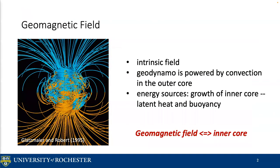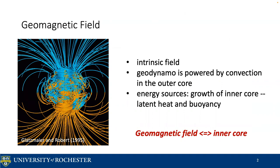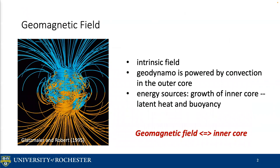I would like to review some basic features of the geomagnetic field today. First, it is an intrinsic field, and the geodynamo is powered by convection in the outer core. The energy source to power the outer core convection mainly comes from the growth of the inner core — for example, the latent heat released during the iron solidification, and the buoyancy generated by the expulsion of light elements. So the geomagnetic field today is tightly related to the inner core.